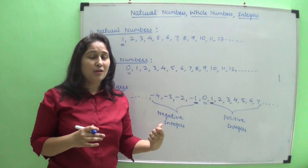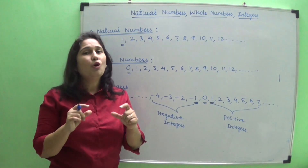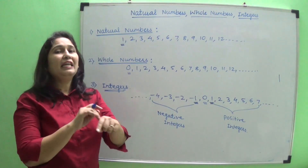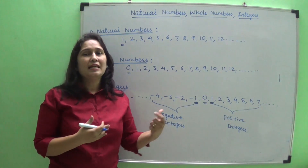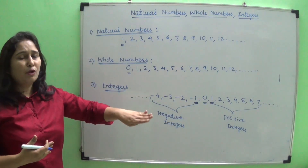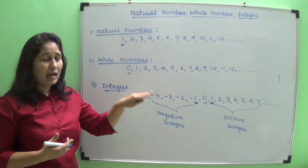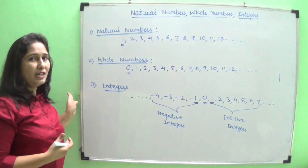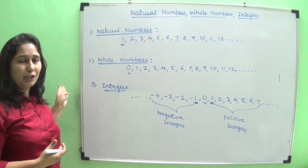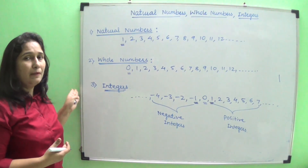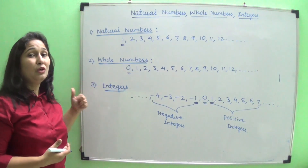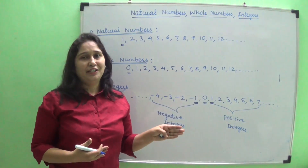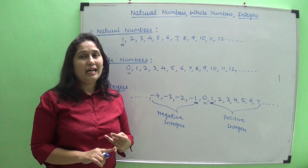But when we simply ask which is the highest integer and which is the lowest integer — without specifying negative or positive — again it is difficult to say. The entire set of integers extends in both directions towards infinity. Going left, numbers keep decreasing, so the lowest integer is undefined. Going right, numbers keep increasing, so the highest integer is also undefined.